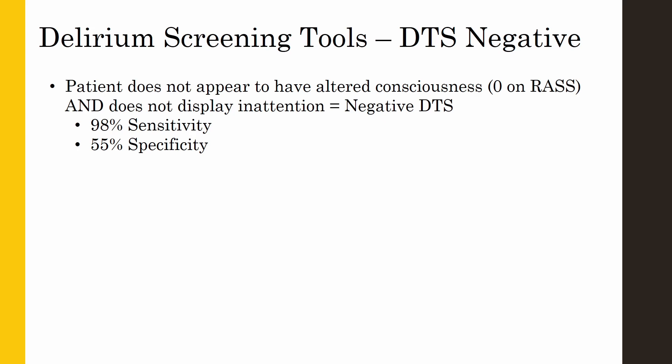This is because the sensitivity of the DTS is very high. But again, if the DTS is positive, proceed to the BCAM because the specificity of the DTS is about 50%. The BCAM, which has a much higher specificity, will be able to confirm a positive DTS.